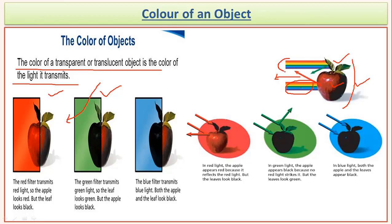If you see the same red apple under a red light, the apple will still appear red because it bounces back the red color. But the green surface of the leaf will appear black or dark in color. This is because the leaf is green and had absorbed all the red color from the source. Therefore no light is reflected back, so you will not be able to identify it with any color — it will appear dark or black.